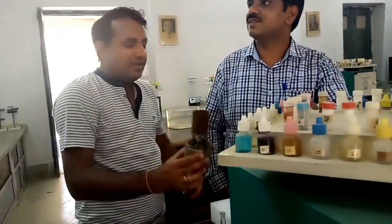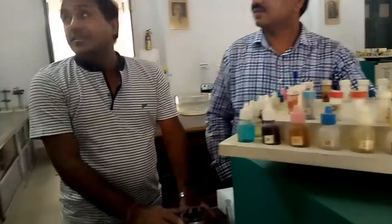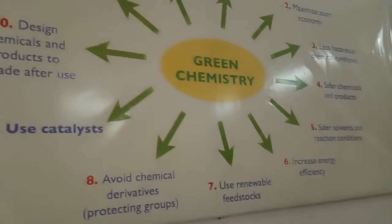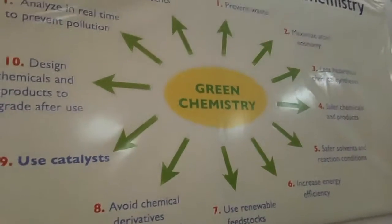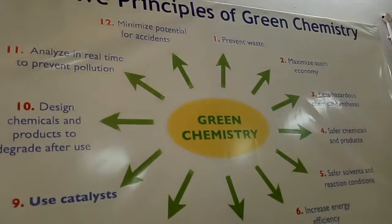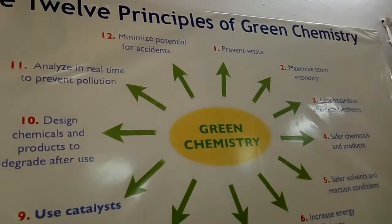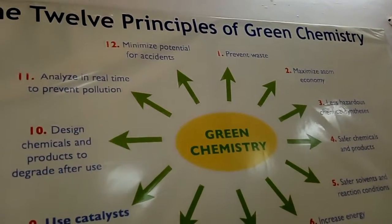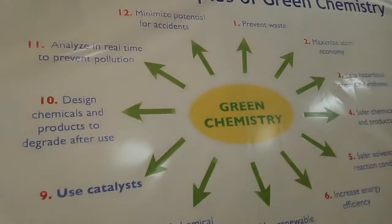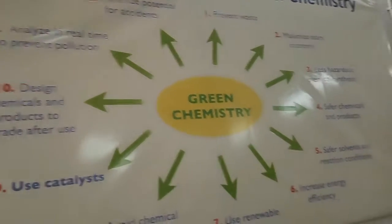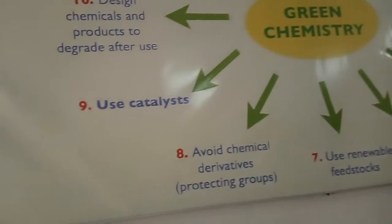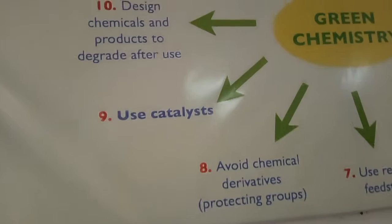Let's talk about green chemistry. These are the 12 principles of green chemistry, given by John Warner in their book on the 12 principles of green chemistry. If you are following even one of them, that means you are moving forward. Anyone can apply these principles.